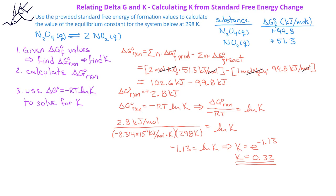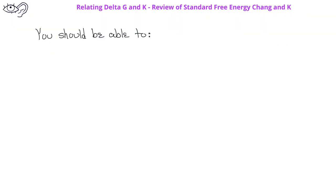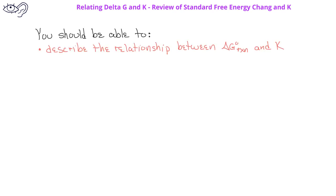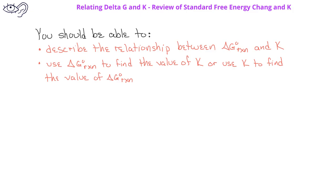We can now do a quick check to see if our answers agree. We have a K that has a value of less than 1, and we have a standard free energy change for the reaction that is positive, and that agrees with what we learned previously. After watching this video, you should be able to describe the relationship between the standard free energy change for a reaction and the equilibrium constant, use the standard free energy change to find the value of the equilibrium constant, or use the equilibrium constant to find the value of the standard free energy change.